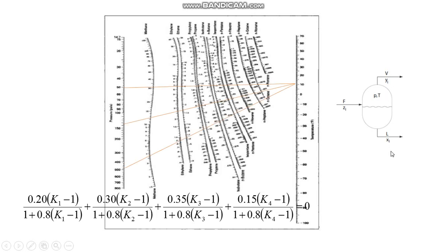So how do I get that Y and X? The equation for X is Z over 1 plus V by F times Ki minus 1. So if I want to get X1, it will be Z1, 1 plus 0.8, whatever K1 I have got for the final pressure, minus 1. Likewise X2, likewise X3 and X4. And once I know X1, X2, X3, X4, I know Y is K1 into X1. So it is directly K1 X1, and then Y2 is K2 X2, K3 X3, K4 X4. How did we get K1, K2, K3, K4? Corresponding to the final pressure which we have got for which this summation is 0.